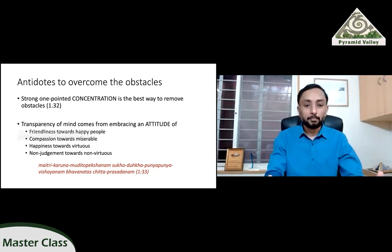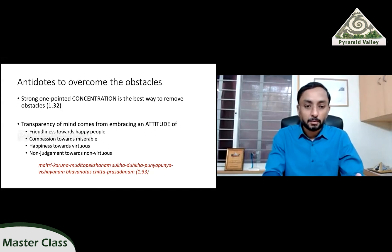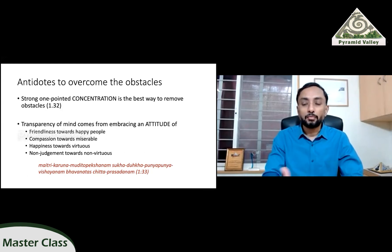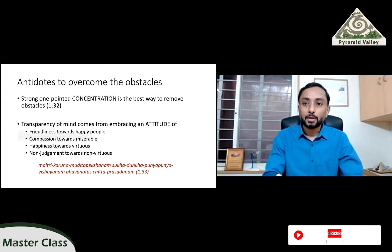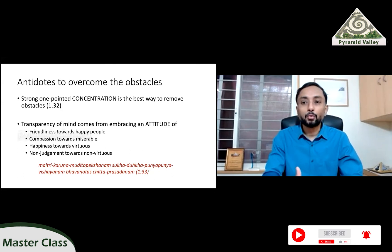The second key antidote is an attitude of compassion. The sutra says: 'Maitri Karuna Mudita Upekshanam Sukha Dukha Punya Apunya Vishayana Bhavana tascha Chitta Prasadanam.' These four — maitri, karuna, mudita, upekshanam — are also called the Brahma Viharas in Buddhist scriptures. Maitri is friendship, karuna is compassion, mudita is happiness, and upekshanam is tranquility or equanimity.